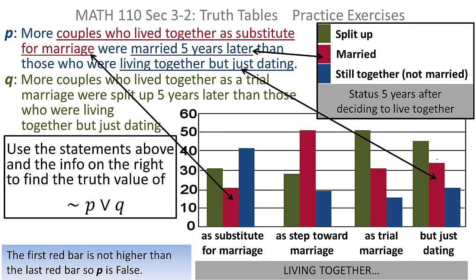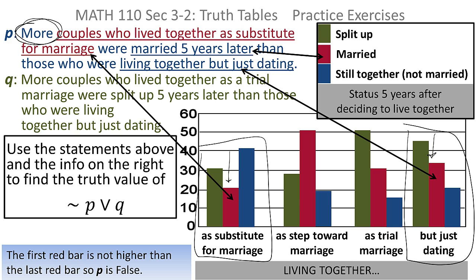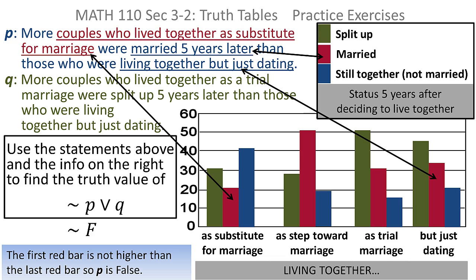So what does that tell you? Well, the first red bar is not higher than the last red bar. P says the first red bar is more than the red bar in the last grouping — the just dating grouping. We're just looking at the first grouping compared to the last grouping; the other two groupings do not matter. P says the red bar in the first grouping is bigger than the red bar in the last grouping, and that's not true. So P is false.